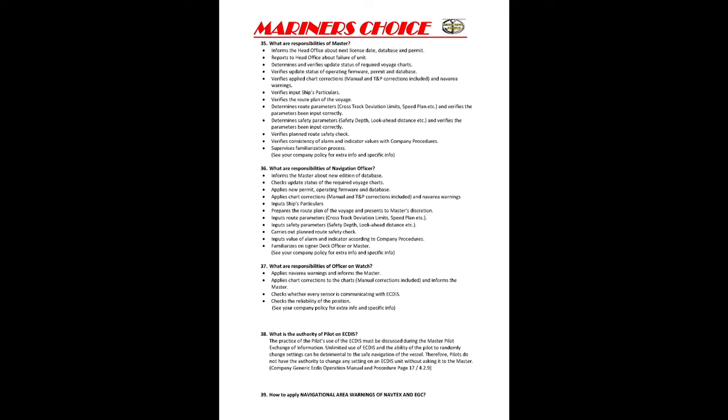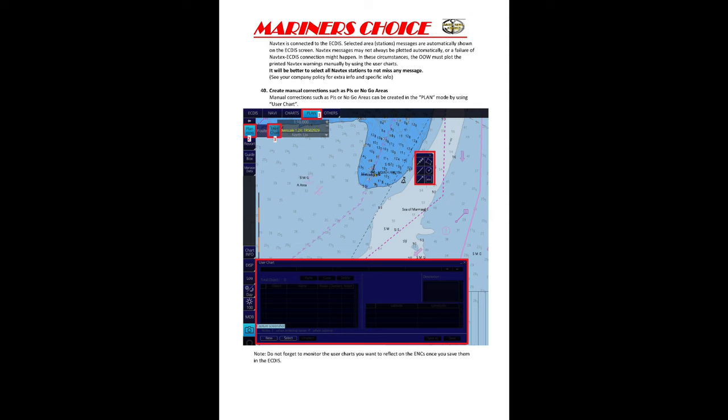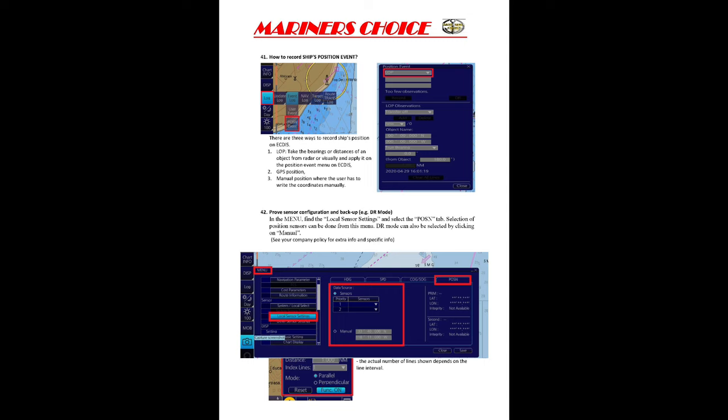How to create manual corrections and no-go areas: go to Planning mode, use the User Chart option. A pop-up menu will open and you can select any option to create manual corrections and no-go areas. To drop a position — as done every hour — go to Navigation mode, on the bottom left corner click Log, then Event Log. There are two options: User Event and Position Event. In Position Event you can drop your GPS position, LOP, or manual position.